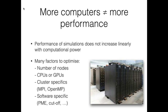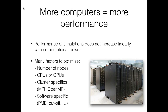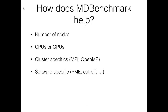There are different factors to optimize: the number of nodes is one, and another is whether to run simulations on CPUs or GPUs, which give different performances depending on the software. You could also try to optimize cluster-specific settings like hyperthreading, MPI, OpenMP, or software-specific settings — for example, in GROMACS you could optimize PME settings. The MDBenchmark tool helps you with the first two of these: number of nodes and CPU vs. GPU comparison.